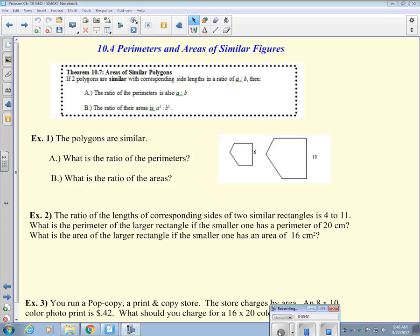So this is 10.4 perimeters and areas of similar figures. The way I remember this is, if I'm measuring in centimeters, so this is for you Justin, if I'm measuring something in centimeters, what are the units of the perimeter?